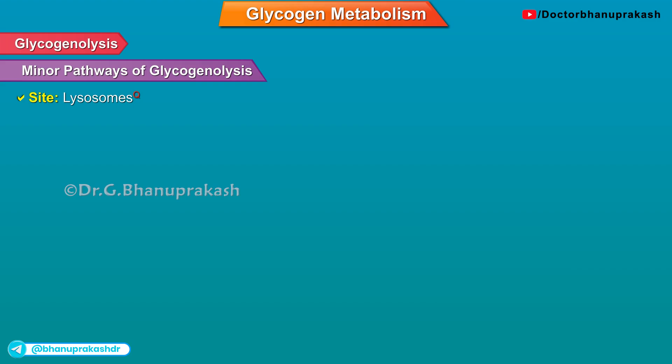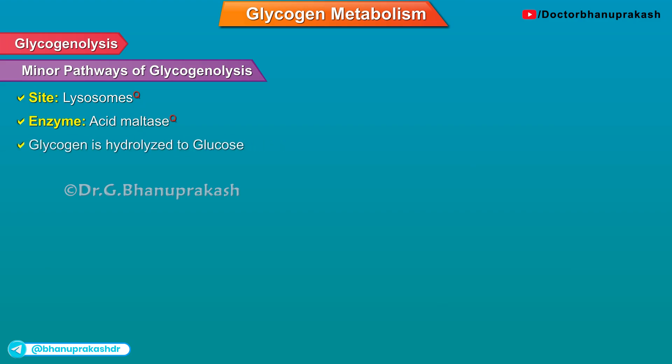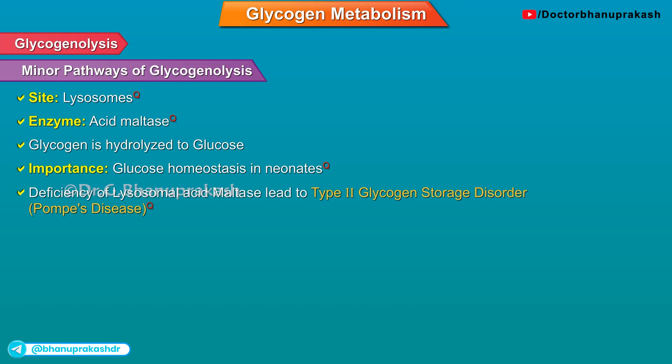Minor pathways of glycogenolysis: The site where it takes place is lysosomes. The enzyme is acid maltase. Glycogen is hydrolyzed to glucose. The importance is glucose homeostasis in neonates. Deficiency of lysosomal acid maltase leads to type 2 glycogen storage disorder, or Pompe's disease.